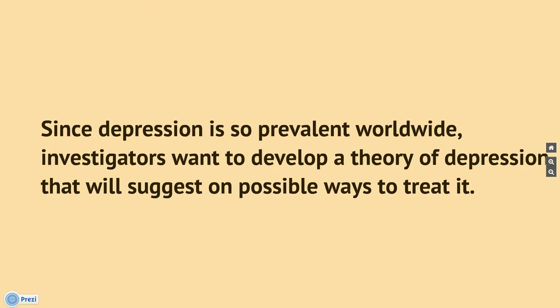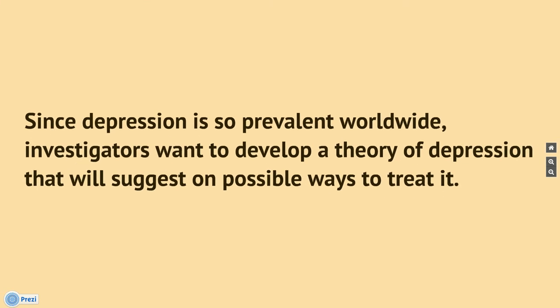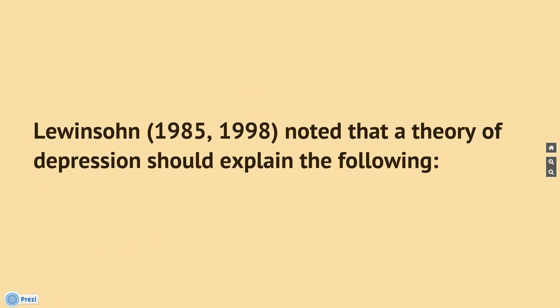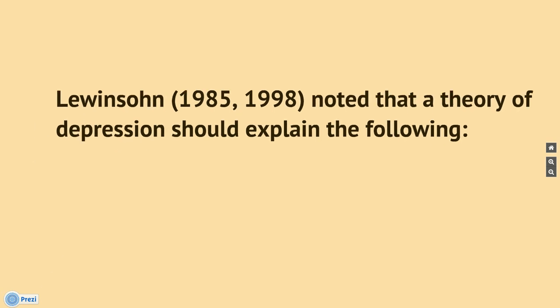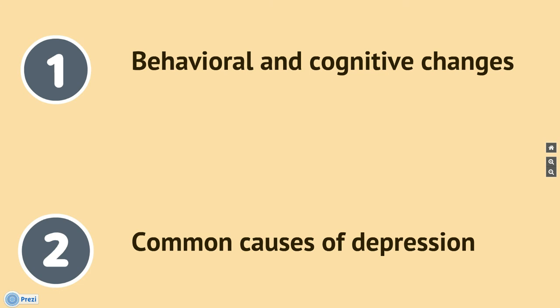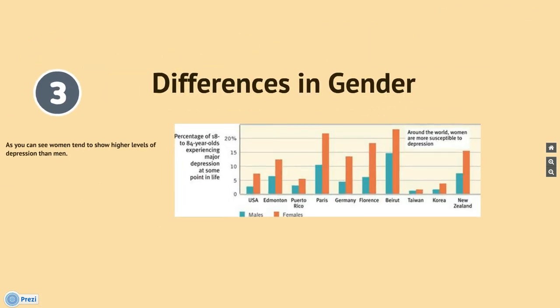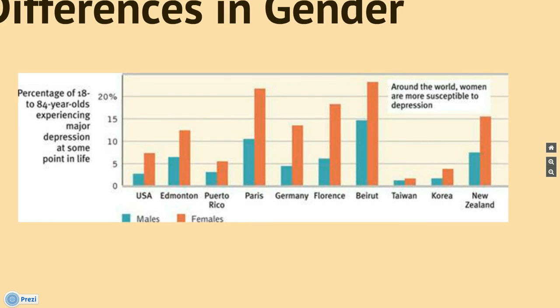Explaining mood disorders: since depression is so prevalent worldwide, investigators want to develop a theory of depression that will suggest some possible ways to treat it. Lewinsohn noted that a theory of depression could explain behavioral and cognitive changes, such as acting out and doing things the person would normally not do. The second would be finding the common cause of depression, which could go a long way in forming new treatments and strategies to prevent becoming depressed in the first place. The third is difference in gender — women show higher levels of depression than men, which can be due to environmental effects, biological effects, and the simple reason that women tend to be more open about their emotions than men do.